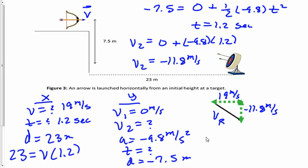Well, all we need to do now is to pythagorize 19 and 11.8 together. So v sub r is going to equal the square root of 19 squared plus 11.8 squared. Now notice how I'm not including negatives because when we square them, they do become positive.